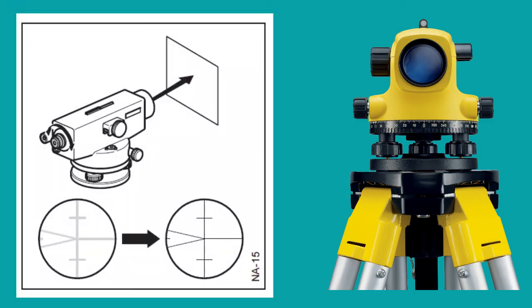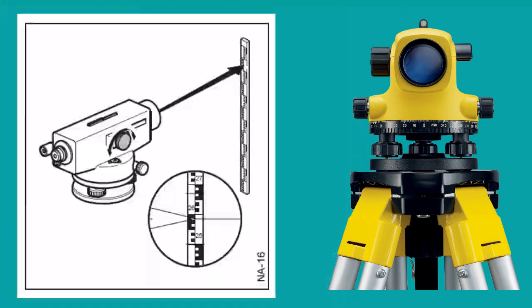Now adjust the eyepiece. Keep a white paper close to objective lens and rotate the eyepiece left or right as required until we get a clear vision of cross hair. Now the instrument is set horizontally and ready for surveying.